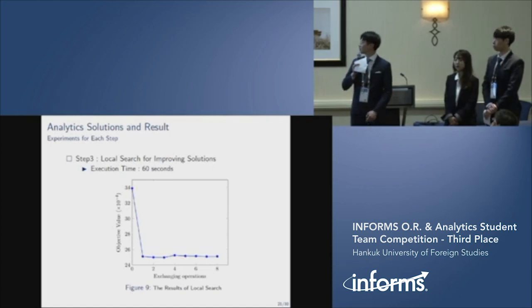In our last step, this graph shows the changes of the objective values. By exchanging operations, we could get better feasible solution. Now, we can see our all steps are working well.